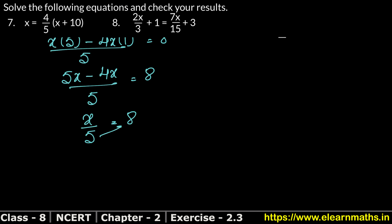Since 5 will go to the other side — divide and multiply — 8 times 5 is 40. So the value of x is 40.